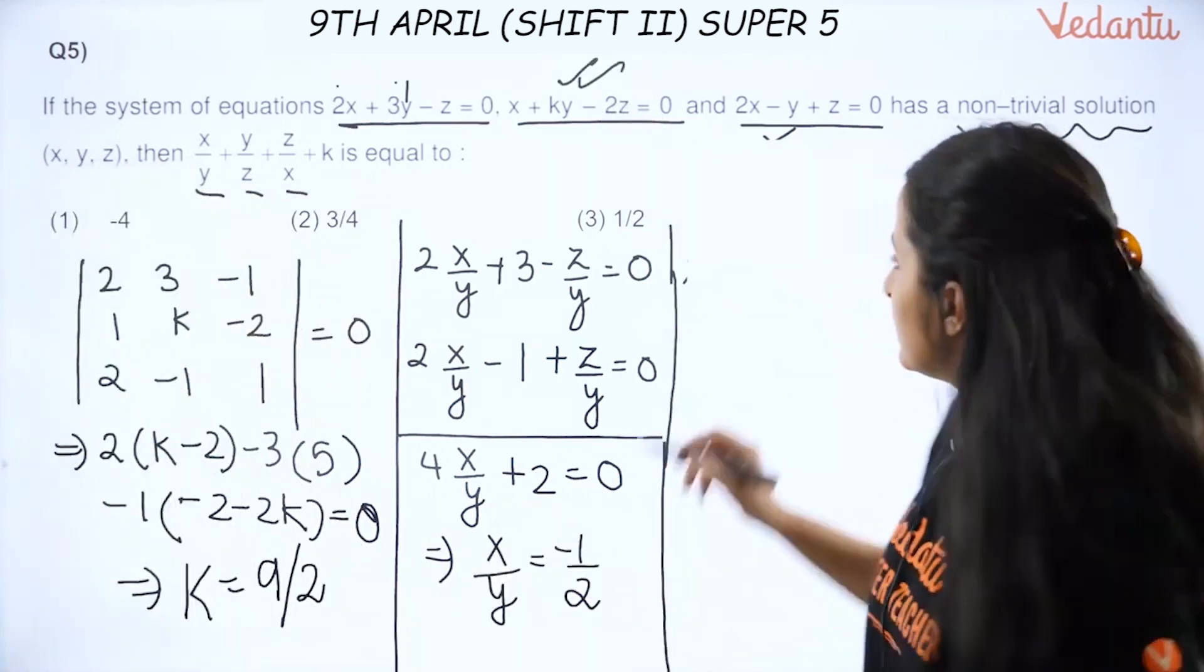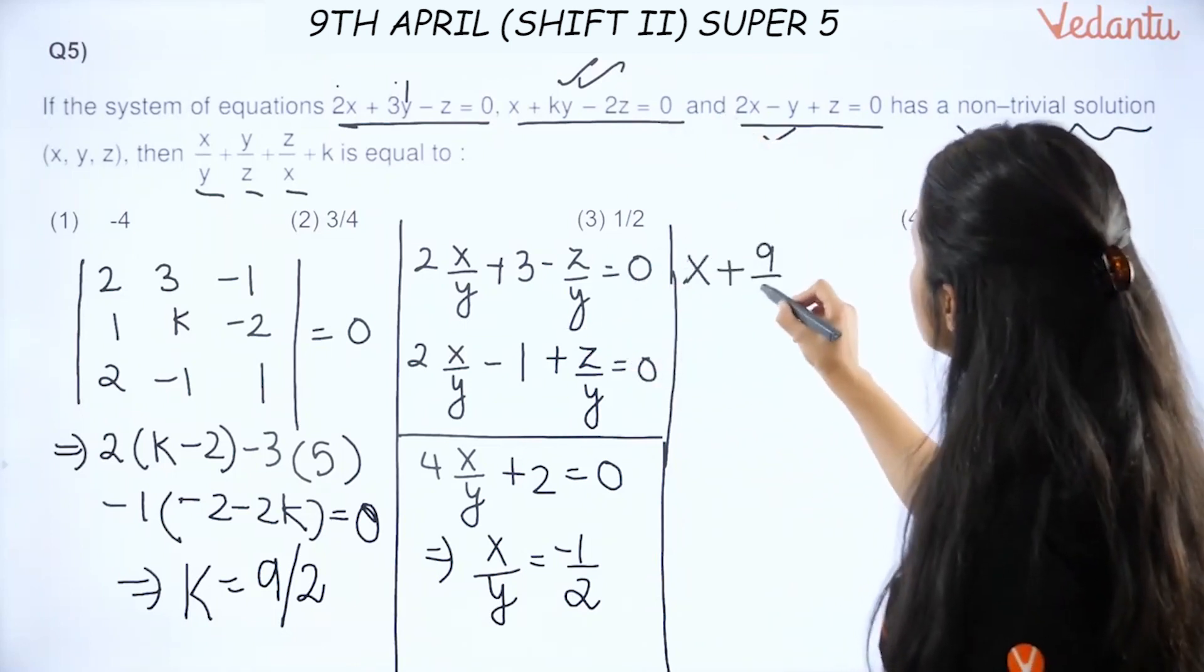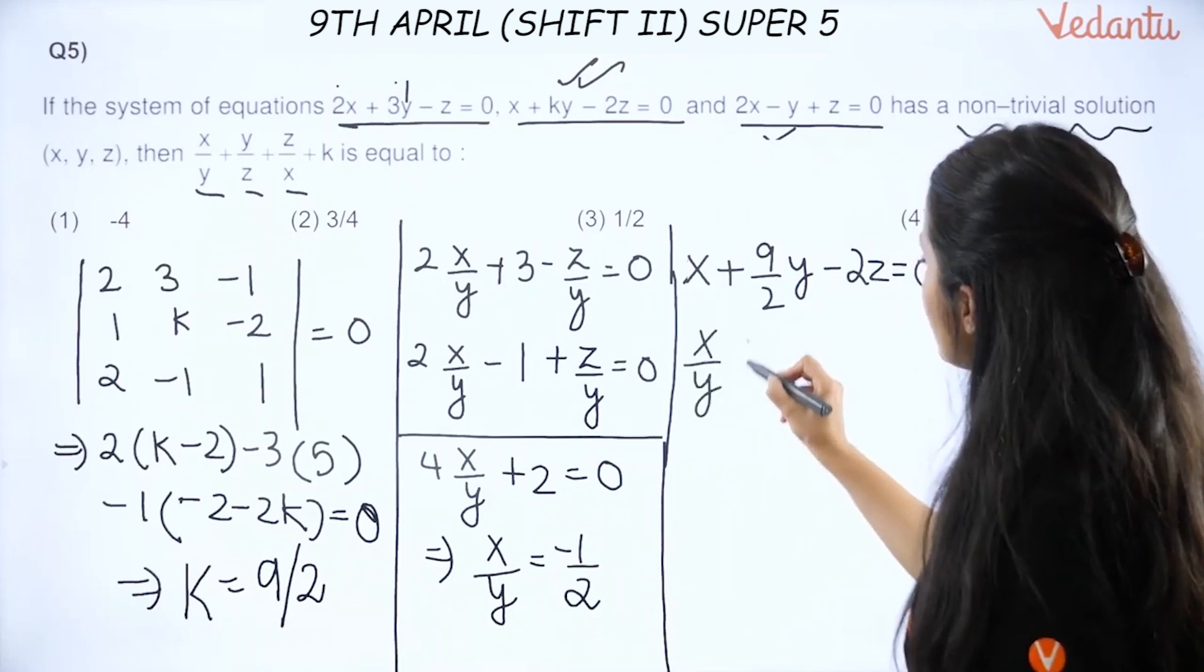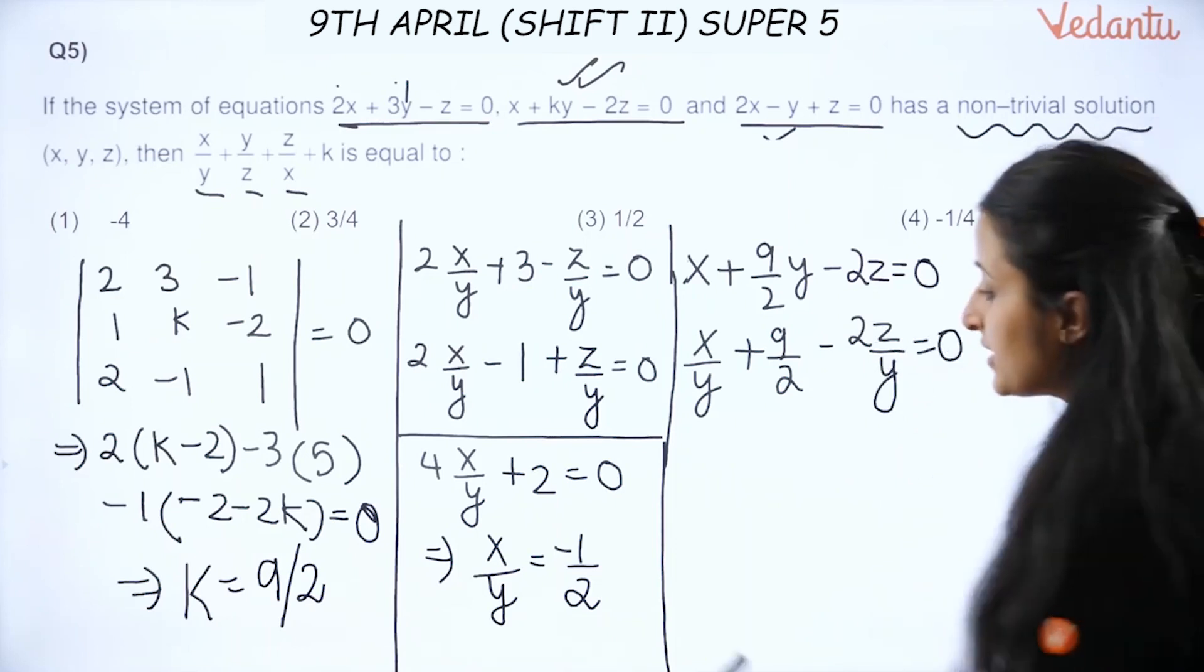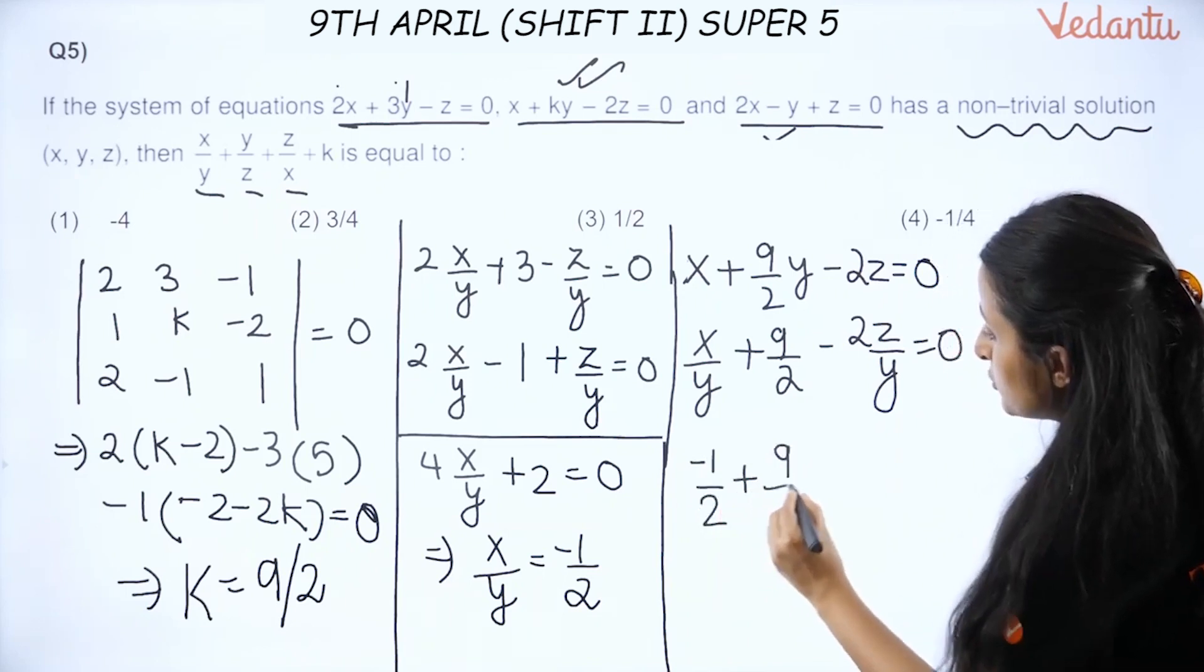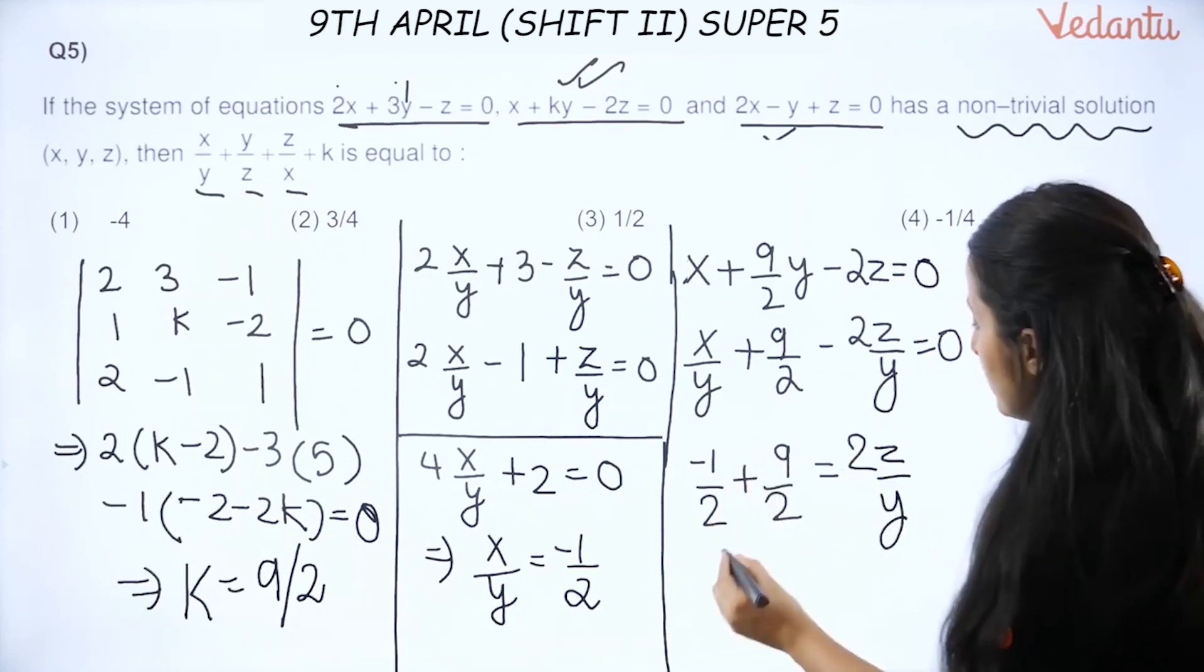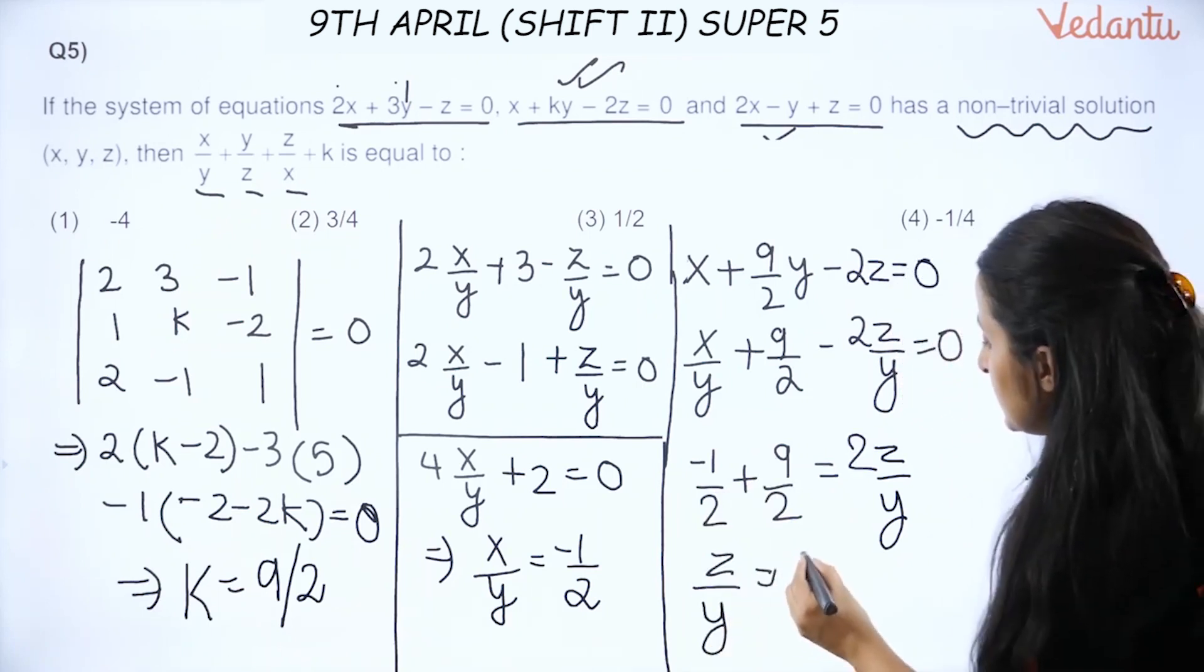Now look at the second one. Here I have x + (9/2)y - 2z = 0. Now if I divide by y one more time, I get (x/y) + 9/2 - 2(z/y) = 0. Because I divided by y, and since x/y I know is -1/2, so -1/2 + 9/2 = 2(z/y). From here find z/y: this becomes 8/2 which is 4, so z/y = 2.